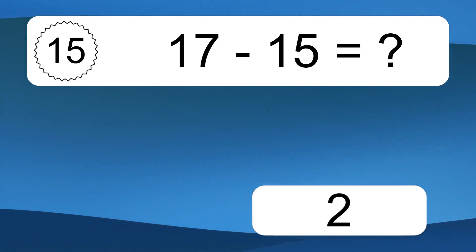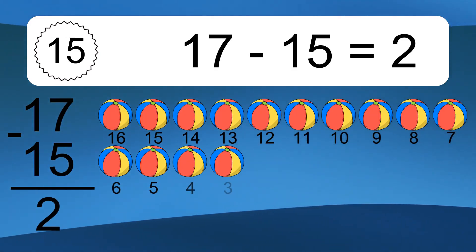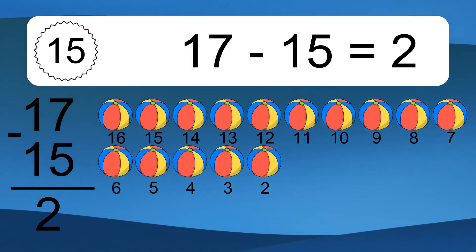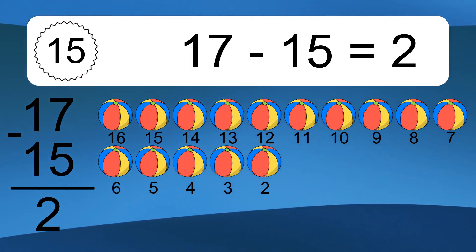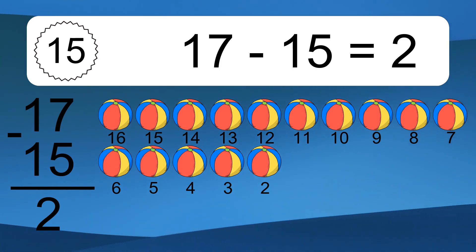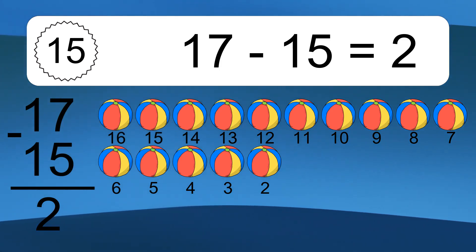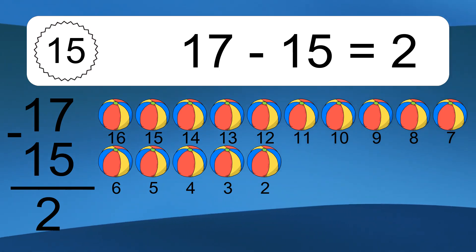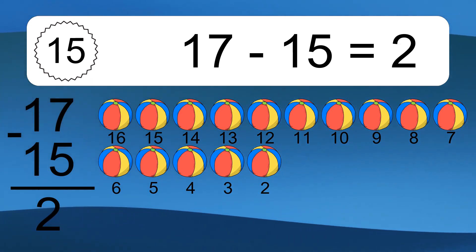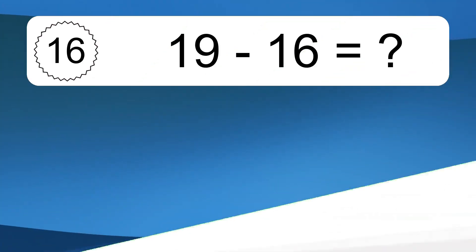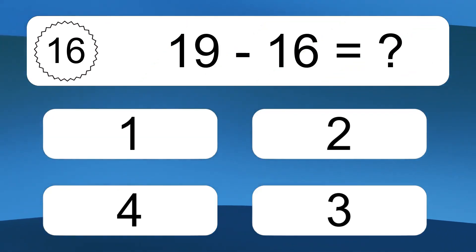17 minus 15 equals 2. Let's count it: 16, 15, 14, 13, 12, 11, 10, 9, 8, 7, 6, 5, 4, 3, 2. 19 minus 16 equals what?